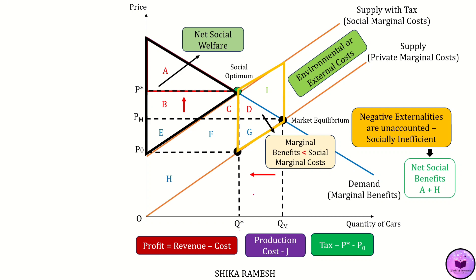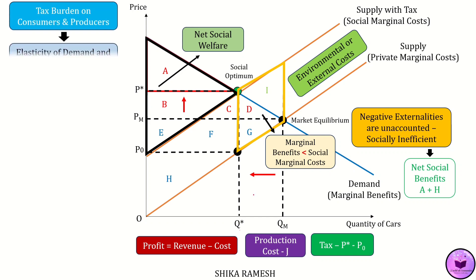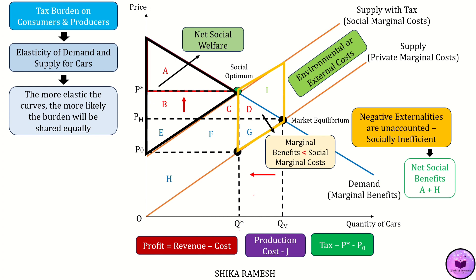The tax burden on consumers and producers depends upon the elasticity of demand and supply for the automobile. In this example, we can see that the consumers and producers bear almost the same tax burden. The total tax paid per automobile till Q star is the area B plus C plus E plus F. The amount of tax that consumers pay is given by the area B plus C, while the amount of tax that producers pay is given by the area E plus F.